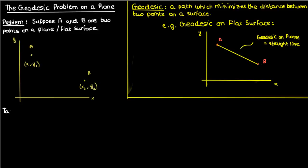Our task here is to find the path y equals f of x such that the distance between A and B along that path is minimized. In other words we'd like to find the geodesic between A and B on a flat surface.